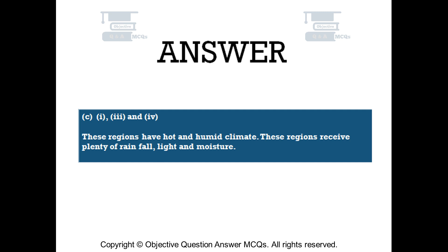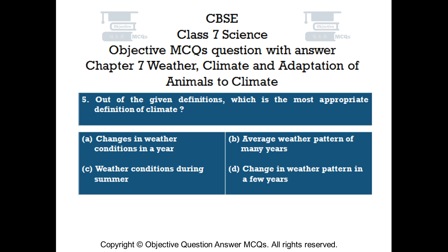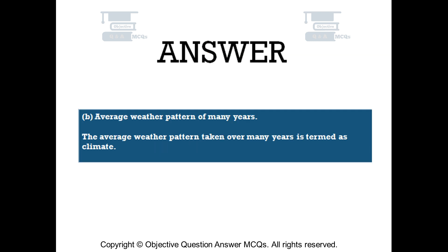These regions have hot and humid climate and receive plenty of rainfall, light, and moisture. Question number 5. Out of the given definitions, which is the most appropriate definition of climate? Option A — changes in weather conditions in a year. Option B — average weather pattern of many years. Option C — weather conditions during summer. Option D — change in weather pattern in a few years. The right answer is Option B: average weather pattern of many years. The average weather pattern taken over many years is termed as climate.